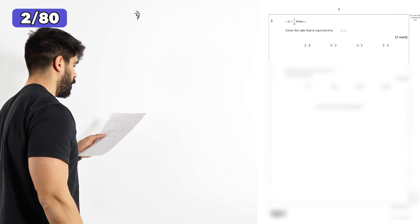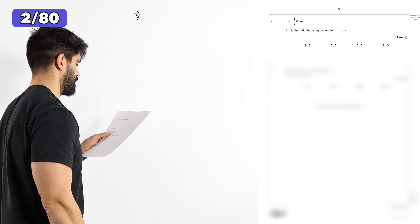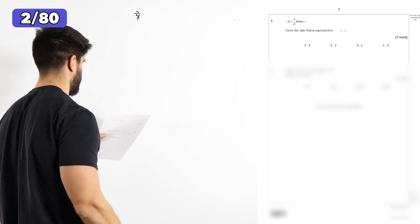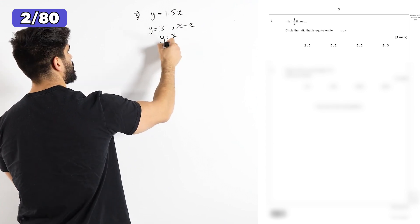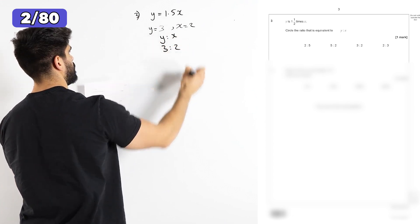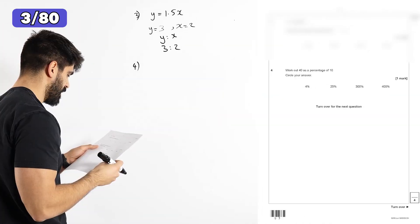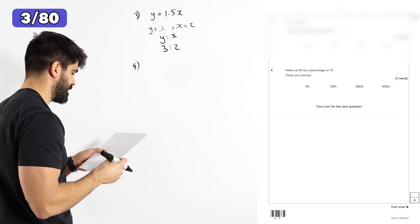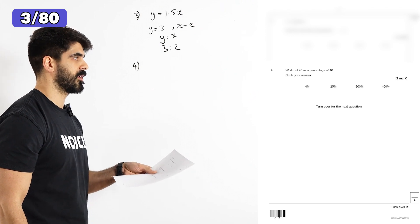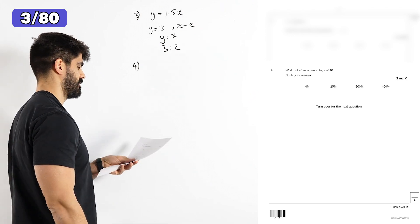Question three. Y is one and a half times X. Circle the ratio equivalent to Y to X. So the ratio Y to X is if Y is three, X is two. So the ratio there is three to two. Question four. Work out 40 as a percentage of 10 is 400% of 10.